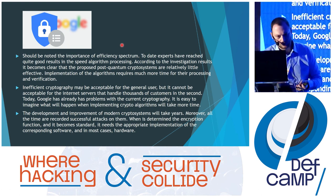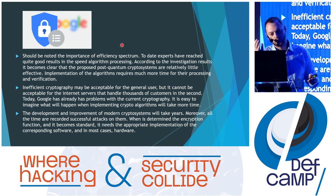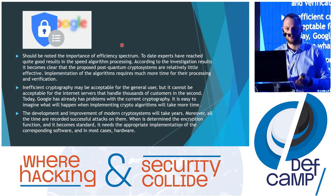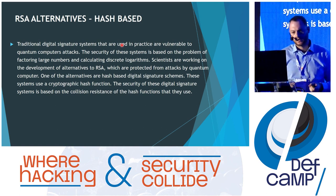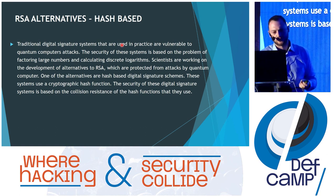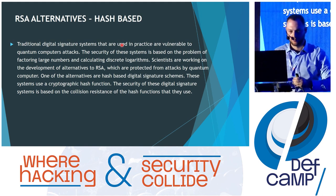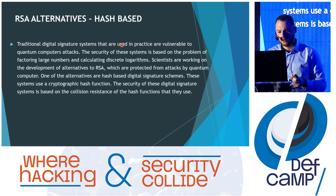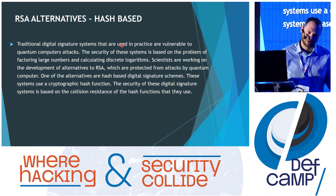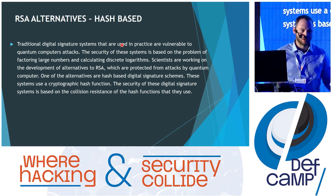Efficiency is also very important — inefficient cryptography may be okay for us, but for servers handling 1,000 processes per second it is impossible to use inefficient cryptography. Hash-based digital signatures are very important because quantum computers break RSA and other digital signatures that are based on difficult mathematical problems. These hash-based digital signatures use just the hash function, and the security is based on the collision resistance of that hash function.